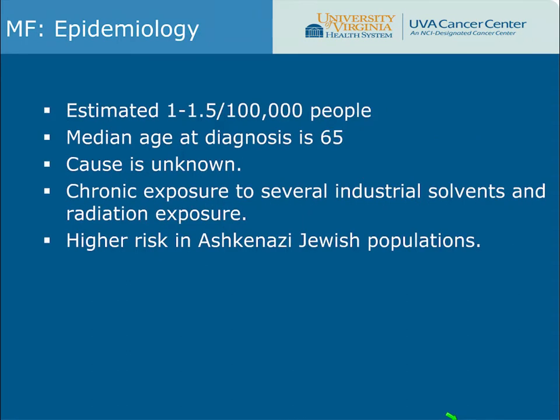For myelofibrosis in particular, it occurs in about 1 to 1.5 per 100,000 people in the United States. The median age of diagnosis is 65, and it occurs slightly more in men than women. Currently, there is no specific known cause linked to myelofibrosis. However, prolonged chronic exposure to industrial solvents and radiation — such as that received from the atomic bomb in Japan — has been thought to contribute. There is also a slightly higher risk in patients of Ashkenazi Jewish descent.